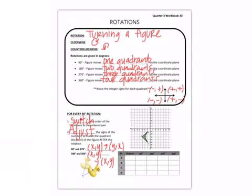So that's for 90 and 270. For 180 and 360, x, y stays the same. But for every rotation that you do, you're going to have to adjust the signs based on whatever quadrant that you land in.